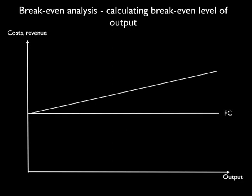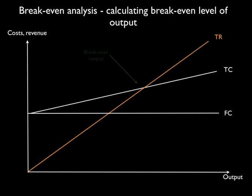Then fixed costs, total costs, total revenue, and the point where total revenue equals total costs is the break-even point. This is shown in green on the chart and this is the amount of output the firm needs to sell